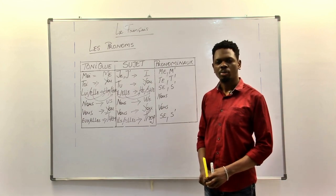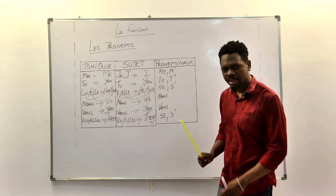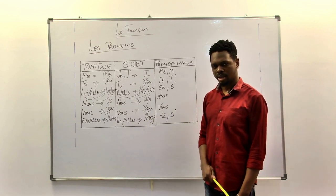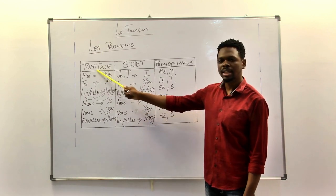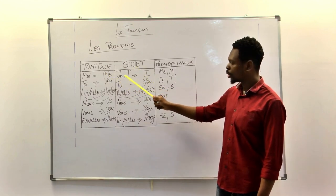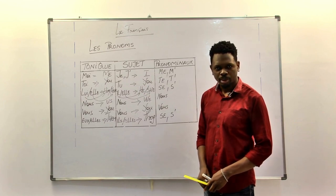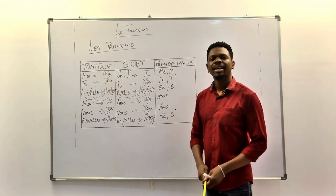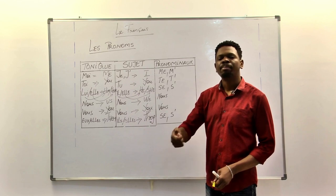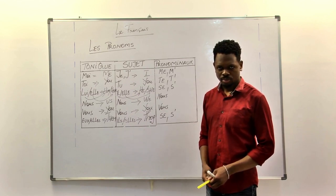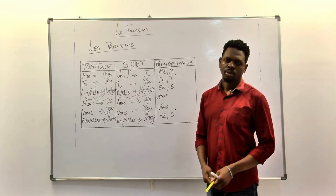So similarities will always be there, but differences are there also. Tonique, sujet. Sujet helps to conjugate a verb. Tonique helps to send back a question.